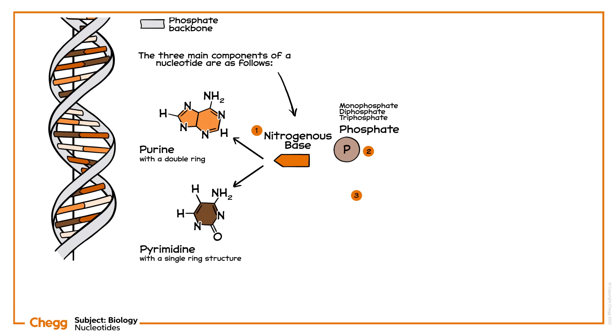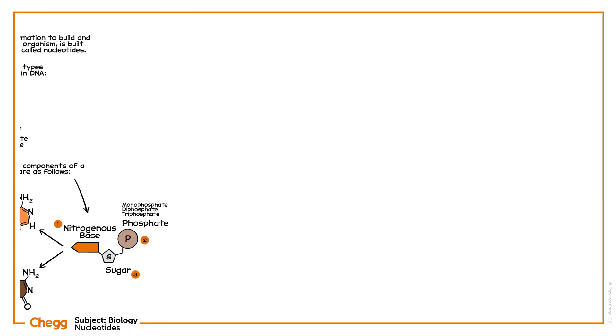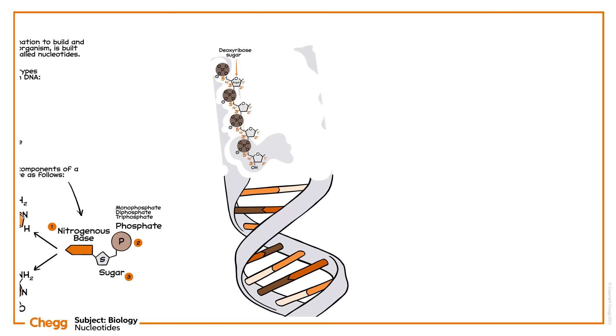And 3. A 5-carbon sugar. This sugar can either be a ribose sugar, with an OH group at position 2, or a deoxyribose sugar, with a hydrogen atom at position 2.